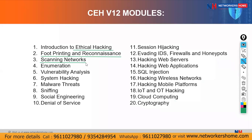Once network scanning is done, we go with enumeration. Enumeration is again getting even more information using the information you already have — you use that same information to gather more information, like user IDs and passwords.